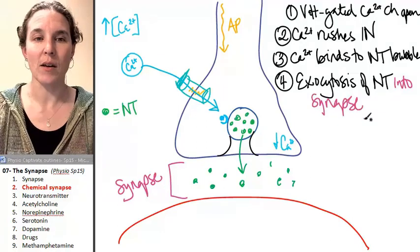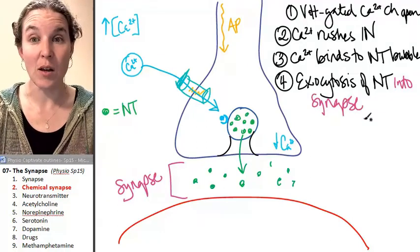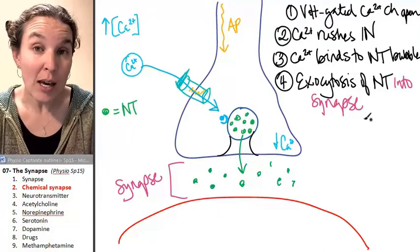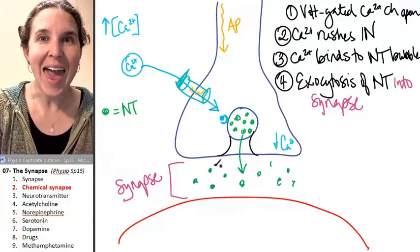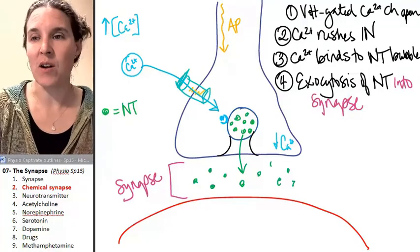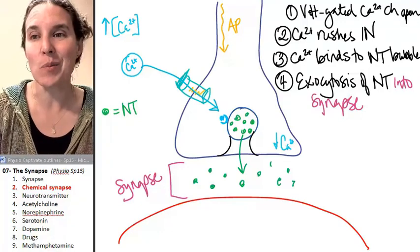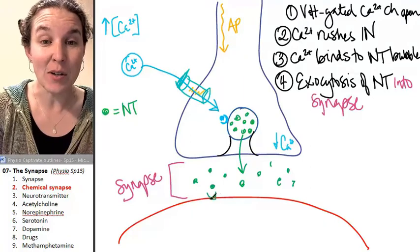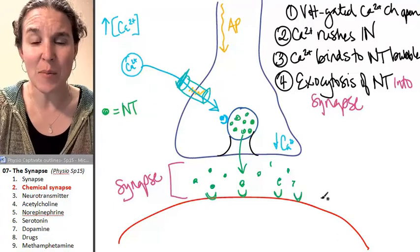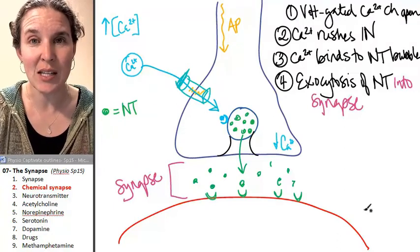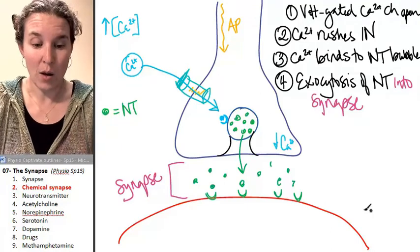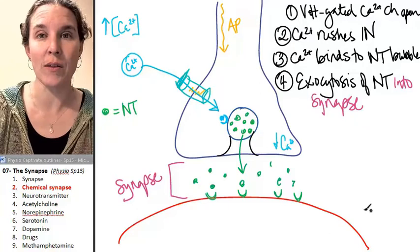Now what? Well, my friends, all sorts of things can happen. Truly, depending on the neurotransmitter and depending on the effector, we could have a myriad of different options. First of all, in most cases, we will have a receptor. It would be really pointless to dump neurotransmitter into a synapse if you didn't have some kind of receptor on whatever is next that can connect with the neurotransmitter.